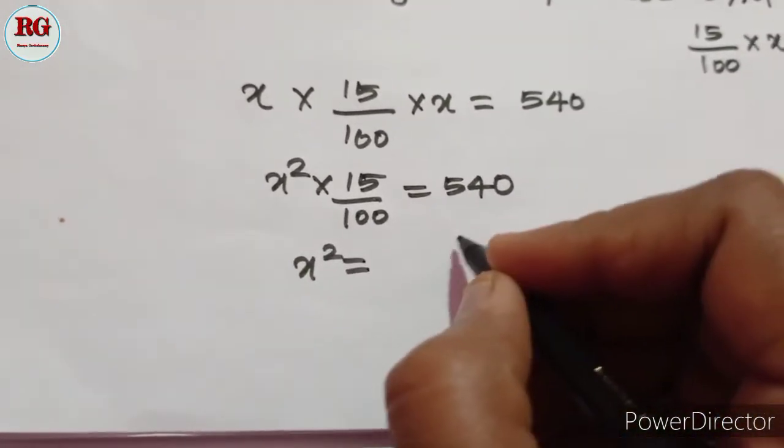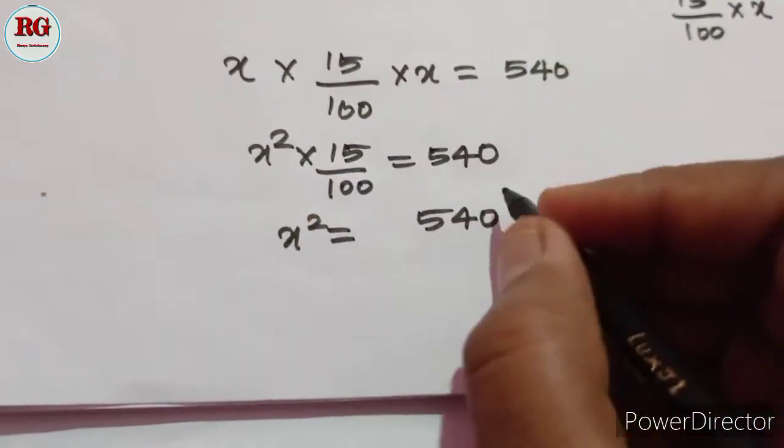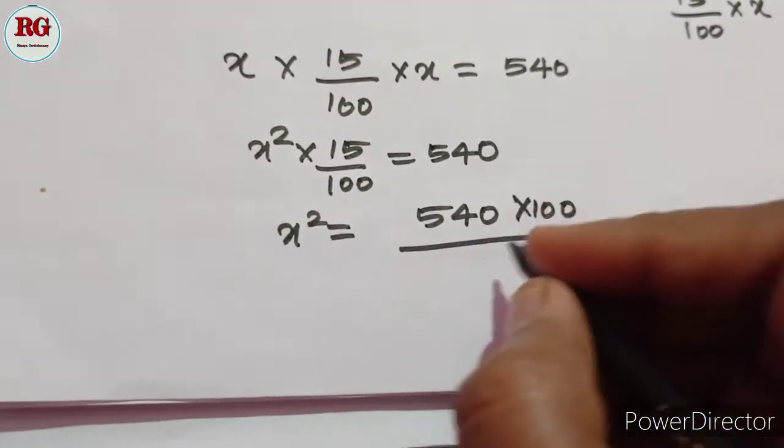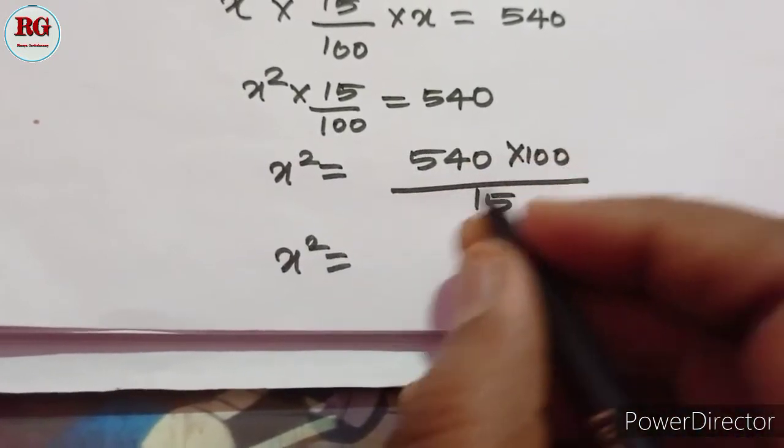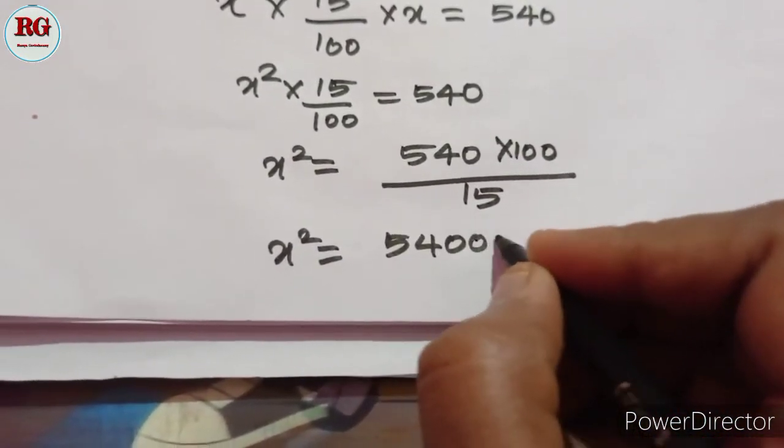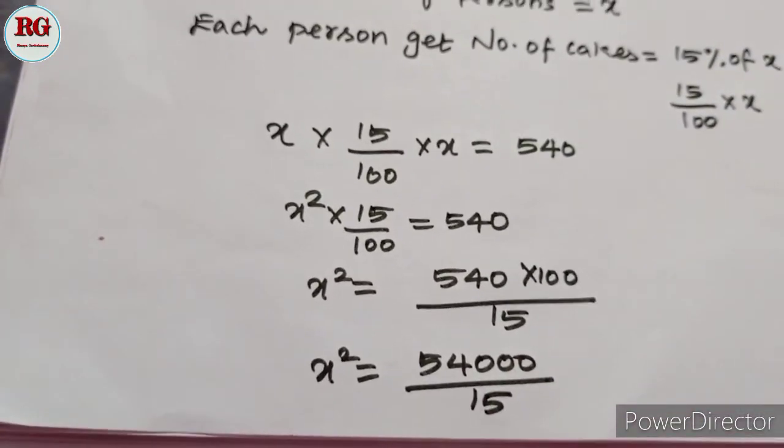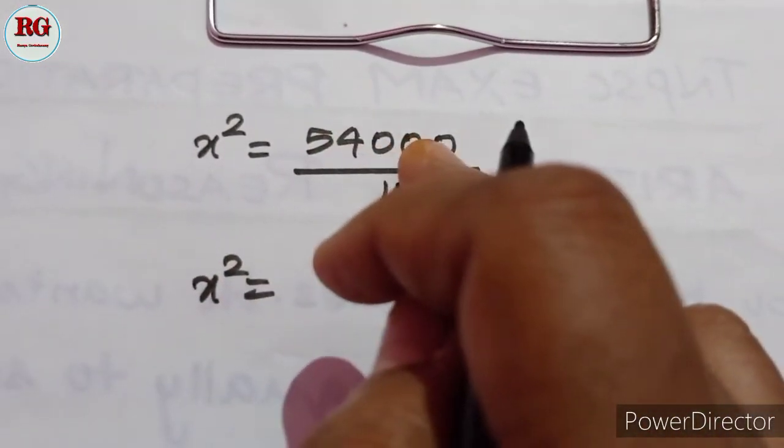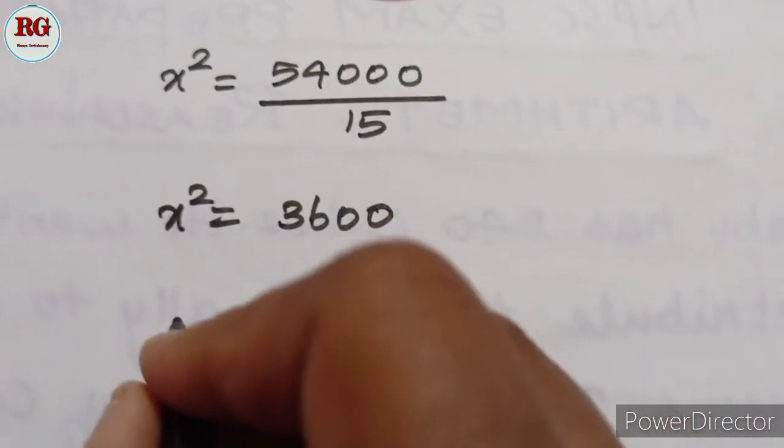The next step: X² equals 540 times 100 divided by 15. So X² equals 5400 divided by 15. That answer is 3600.